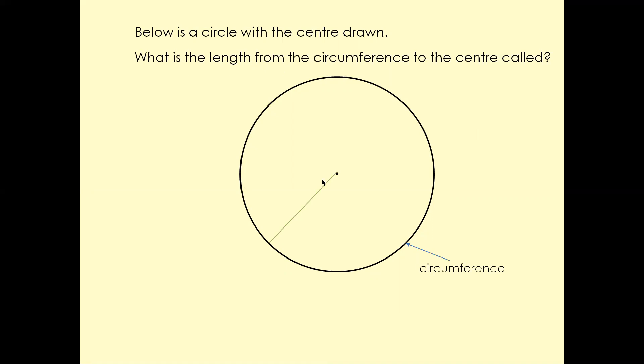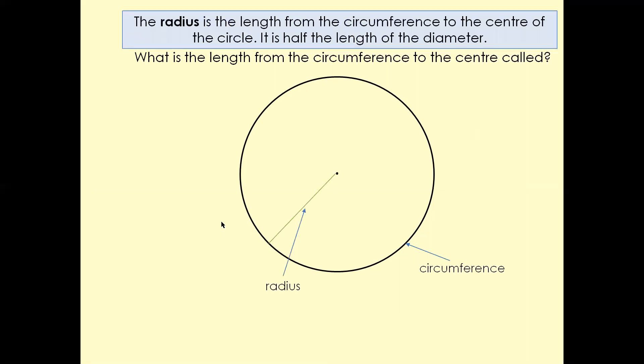What is the length from the circumference to the center called? The answer is the radius. The radius is the length from the circumference to the center of the circle and is half the length of the diameter.